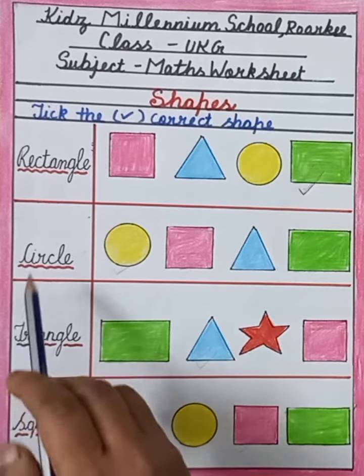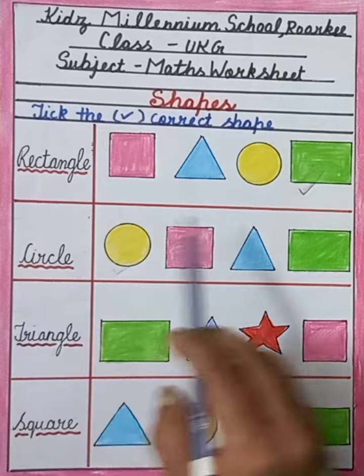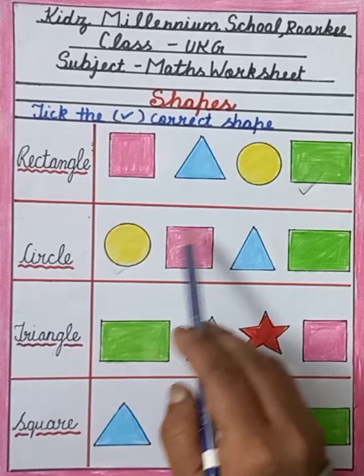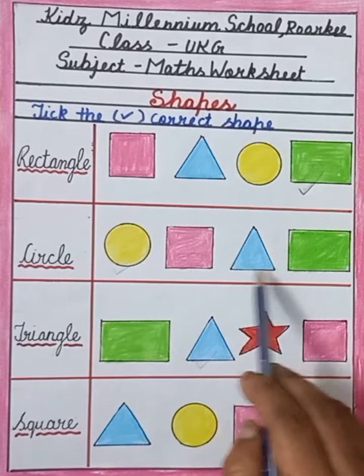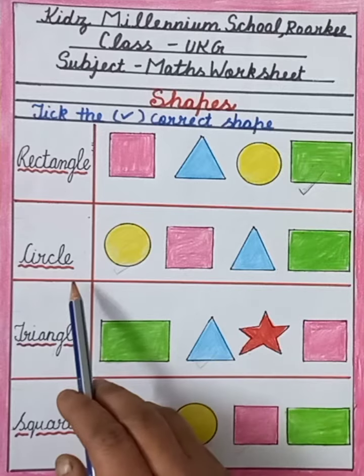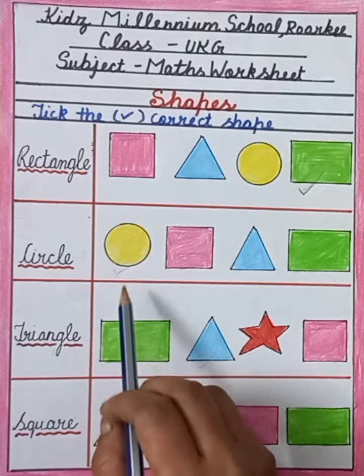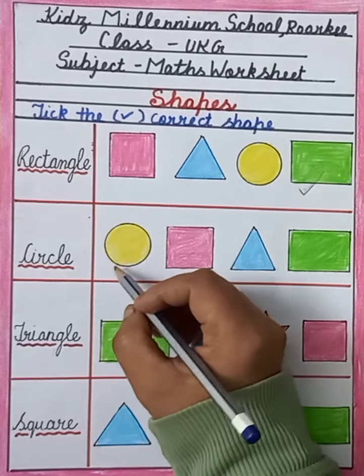Next, the given name is circle. Now you can see here is circle, then square, then triangle, then rectangle. So we will find out the circle here. So we will tick the circle here.